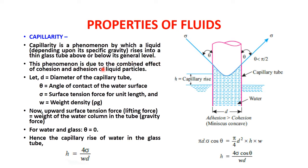This phenomenon is due to the combined effect of cohesion and adhesion of liquid particles. Let small d be the diameter of the capillary tube, theta the angle of contact, sigma the surface tension force per unit length, and w the weight density (specific weight), where w equals rho times g. The upward surface tension force — the liquid lifting force — equals the weight of the water column, which is the gravity force. For water in glass, theta equals zero.